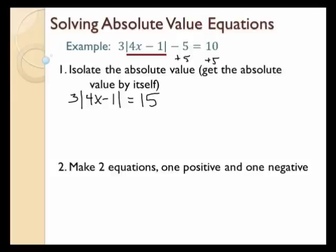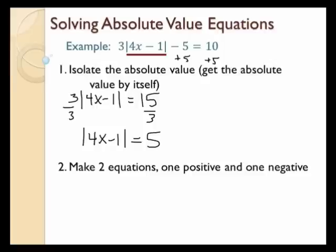To isolate this absolute value even more, I want to divide by 3 in this case. So I'm going to divide both sides by 3. On the left-hand side I end up with the absolute value of 4x minus 1. On the right-hand side I end up with 5, since 15 divided by 3 is 5. Everything inside that absolute value has to equal positive or negative 5, because the absolute value of negative 5 is positive 5, and the absolute value of positive 5 is also positive 5. So 4x minus 1 can equal negative 5 or positive 5.